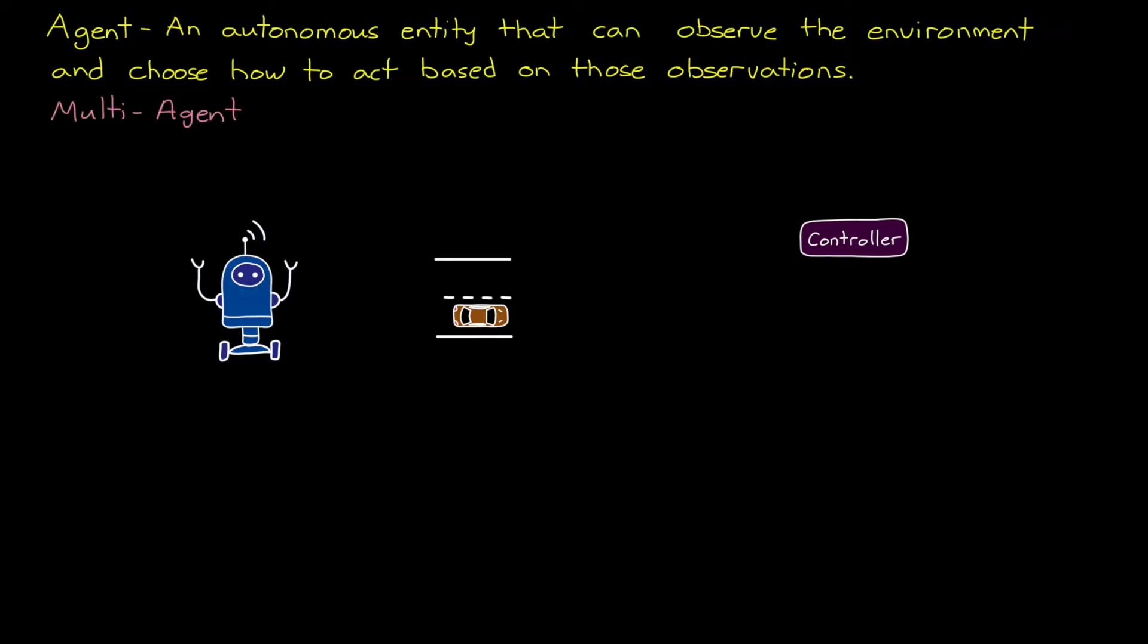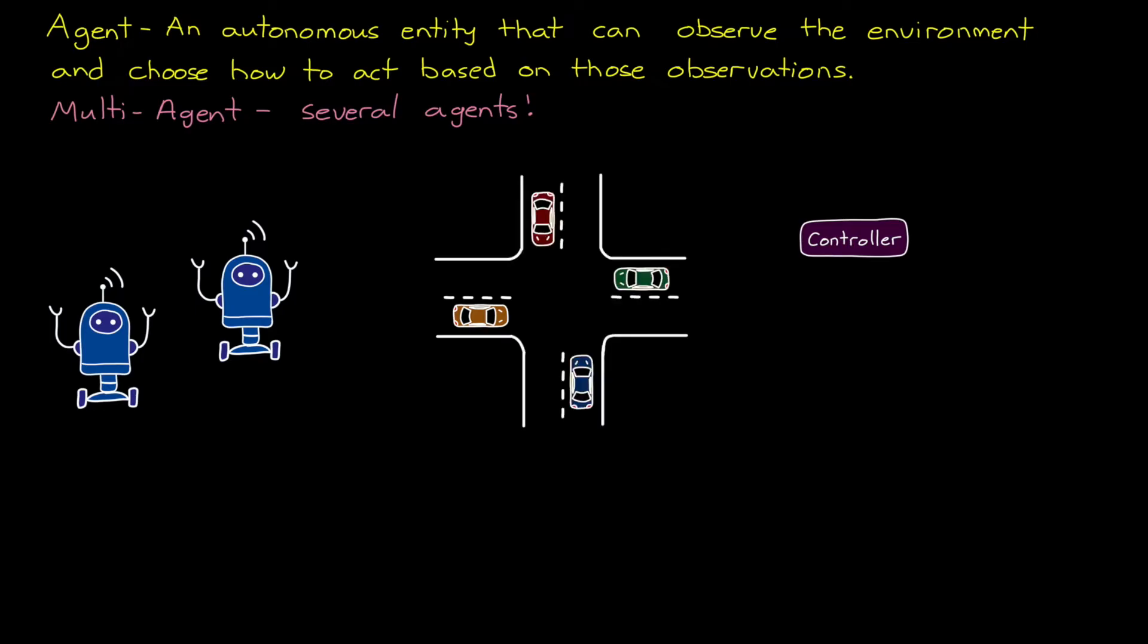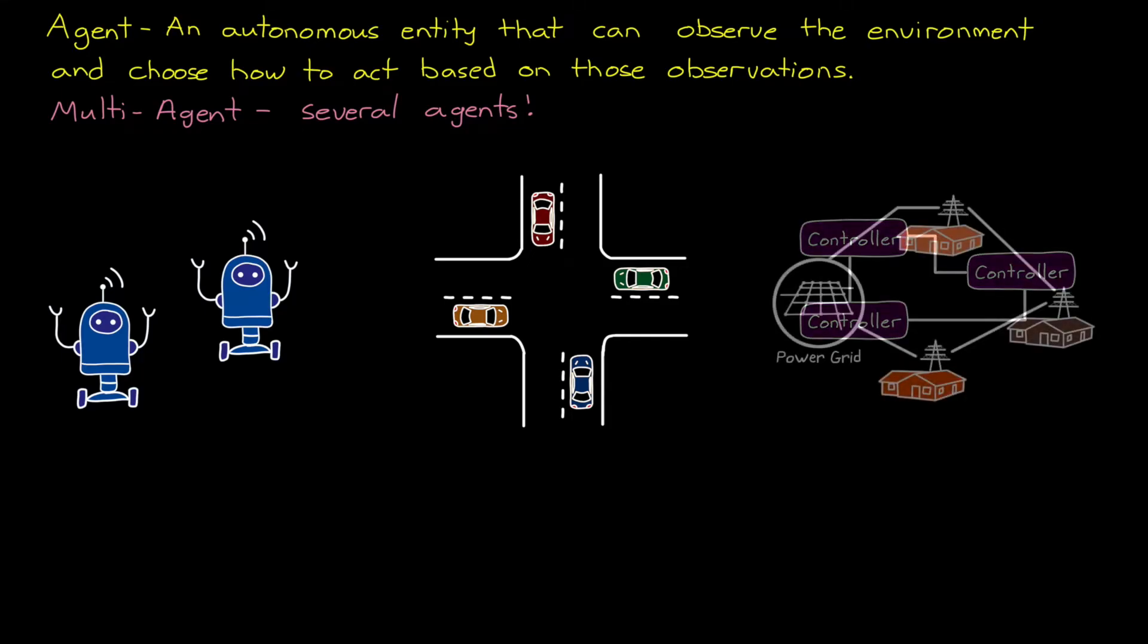Now, a multi-agent system is one in which there are multiple of these autonomous entities, sharing a common environment. Think of a swarm of robots that operate in a formation, or several autonomous vehicles driving through the same intersection, or a network of distributed controllers that are trying to accomplish a larger goal. For example, several smart homes that are each trying to schedule power-consuming activities, like car charging, in such a way that balances the power load throughout the day, rather than just at peak times.